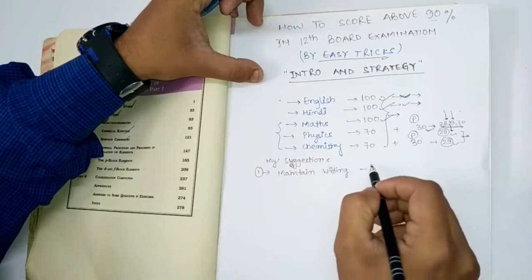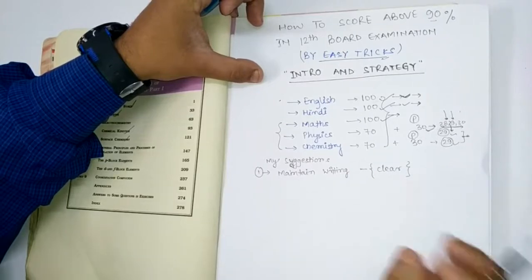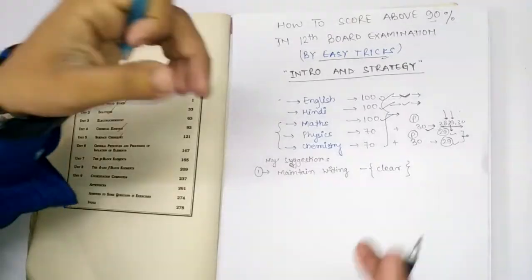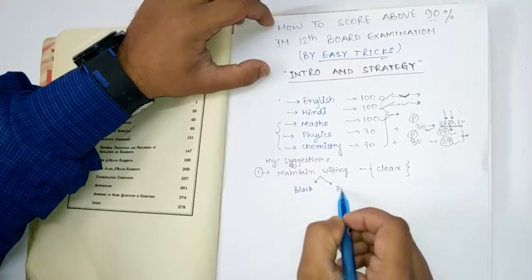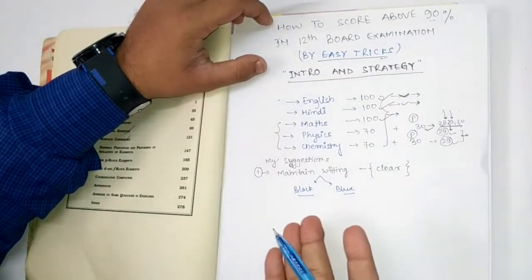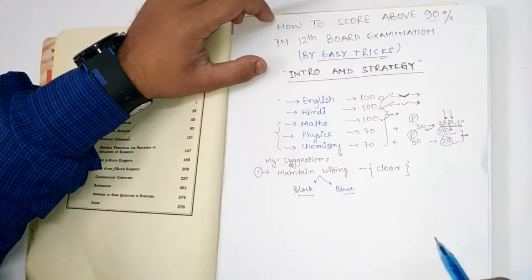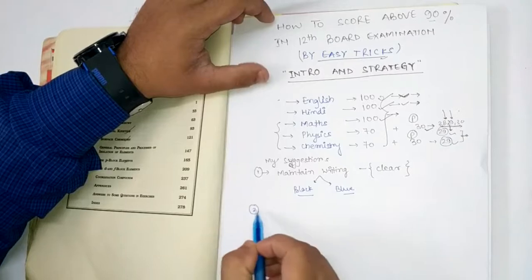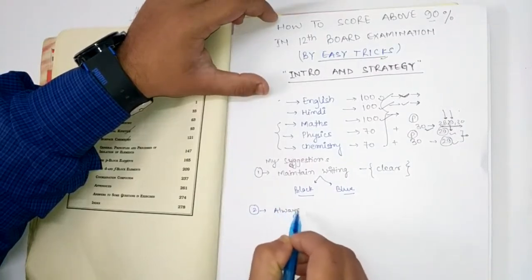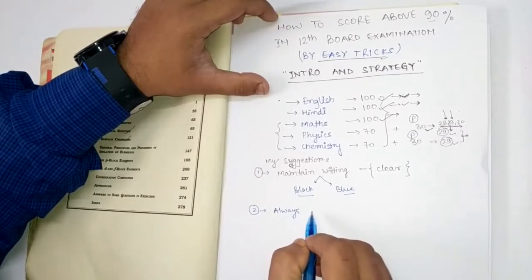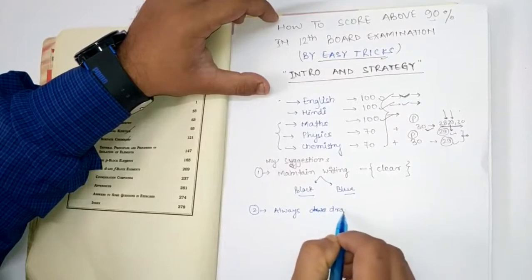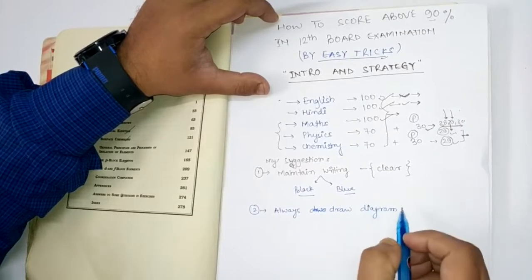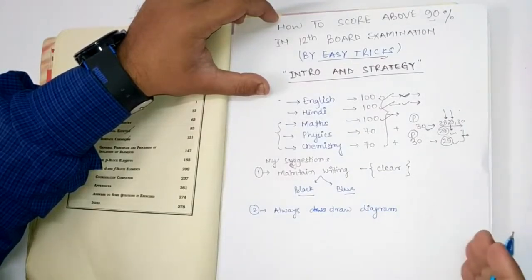Your writing should be good, and if it is not good then it must at least be clear — whatever you are writing must clearly convey your answer. A very good tip is to use two types of pens: black for headings and blue for the written section. These are very important things that are going to fetch many marks in the board. Second thing: if you don't know the exact answer in the exam, always try to draw the diagram.